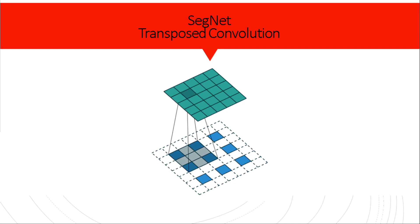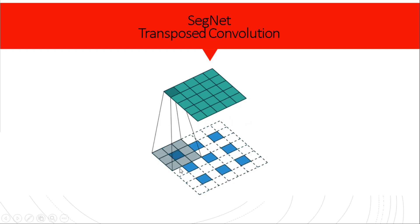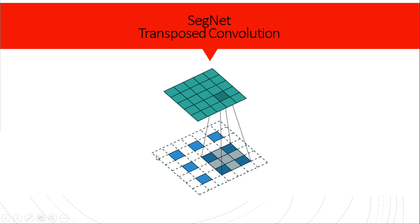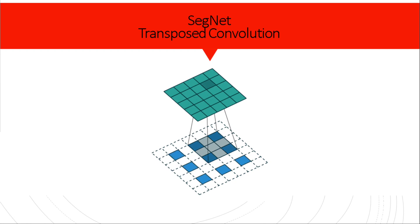The goal of transpose convolution is to increase the size of the feature map — for example, from a 3x3 input to a 5x5 output feature map. The process consists of the following steps: we take the 3x3 feature map and add zeros around each element, then apply a 3x3 convolutional filter kernel that slides over this padded map. At each position it generates one output element, one pixel in the final 5x5 map.